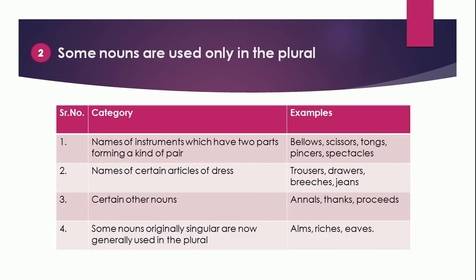Point 2: Some nouns are used only in plural form. For example, names of instruments that have two parts forming a kind of pair, like bellows, scissors, tongs, pincers, spectacles. Names of certain articles of dress, like trousers, drawers, breeches, jeans. Certain other nouns like annals, thanks, proceeds. Some nouns now generally used in plural form, like arms, riches, eaves. So these nouns are always used in plural form.